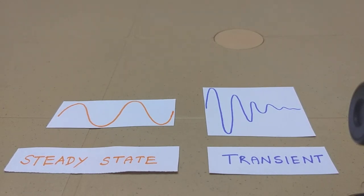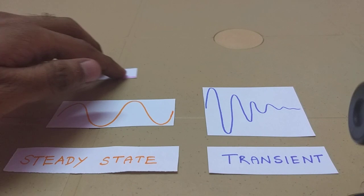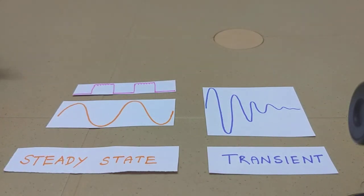Now steady state signals can be comprised of many sine waves. Here I've represented a pure tone, but it can really be like a finite sum of sine waves. When it is a finite sum of sine waves, it looks something like this, like a square wave.